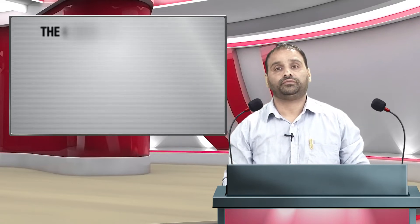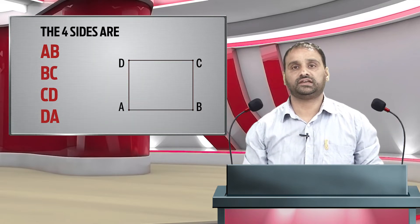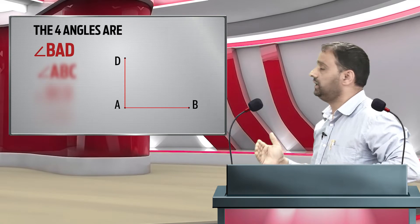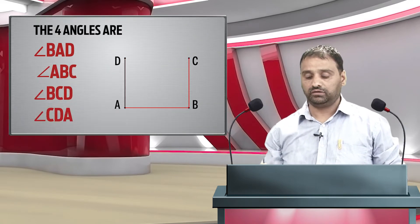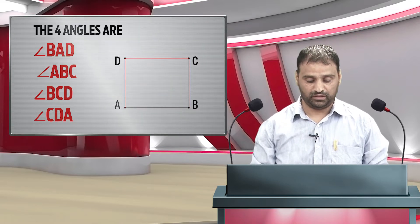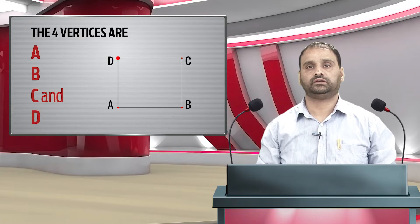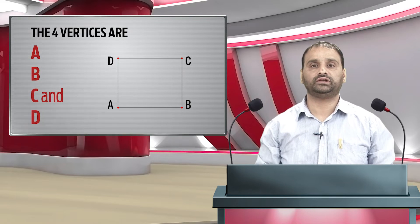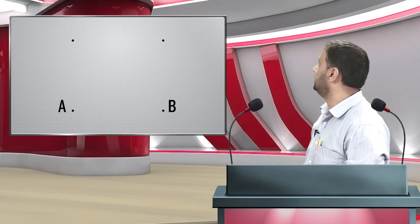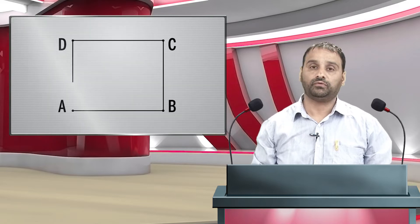The four sides of the quadrilateral are AB, BC, CD, and DA — four line segments joined in an order. The four angles of the quadrilateral are angle A (or angle BAD), angle B (or angle ABC), angle C (or angle BCD), and angle D (or angle ADC). The four vertices are A, B, C, and D, where two lines meet at a point. A quadrilateral has four sides, four angles, four vertices, and two diagonals.